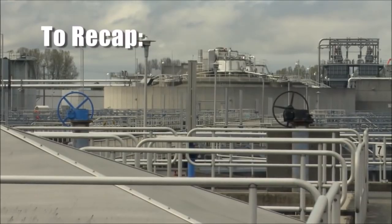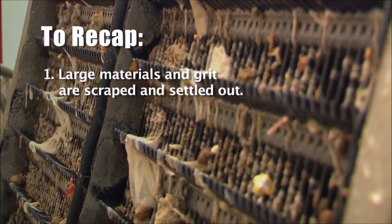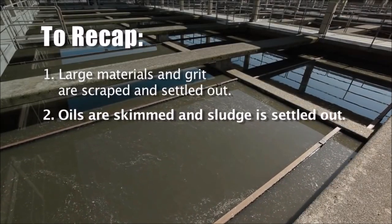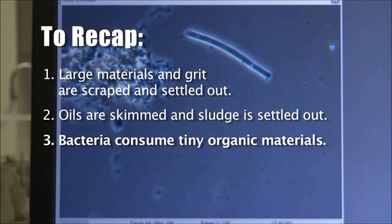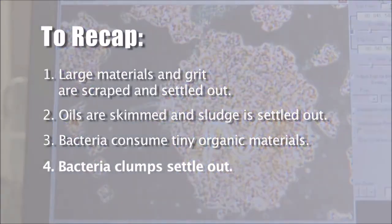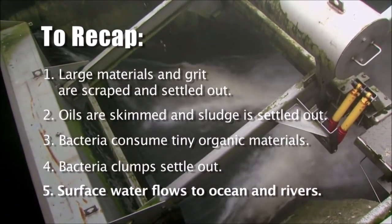To recap. Large materials and grit are scraped and settled out. Oils are skimmed and sludge is settled out. Then bacteria consume tiny organic materials. Then the bacteria clumps settle out. Finally, the surface water flows to the ocean or river.